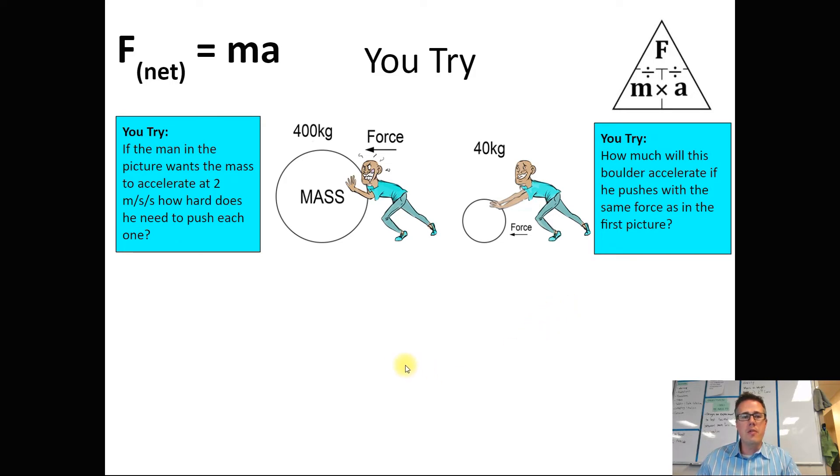If you're still watching, you're ready to check your work for these two. For the one on the left, the man in the picture wants the mass to accelerate by two meters per second per second. We want to figure out how hard he has to push. In the picture, they're telling us that the mass is 400.